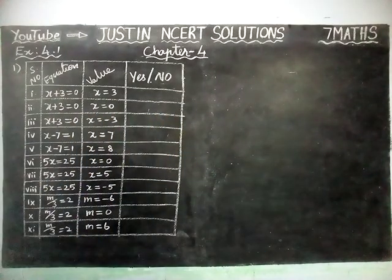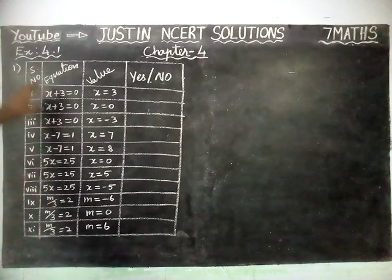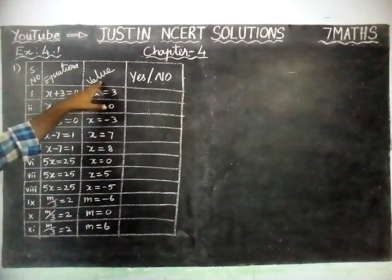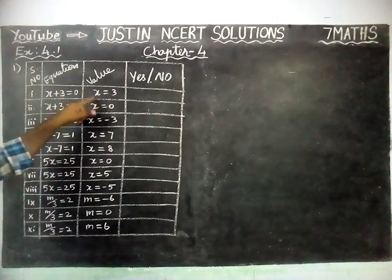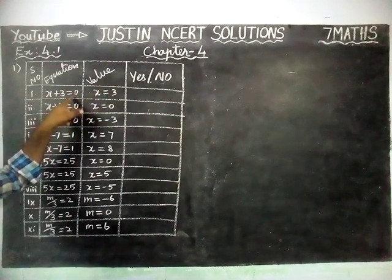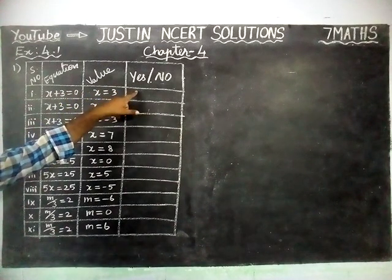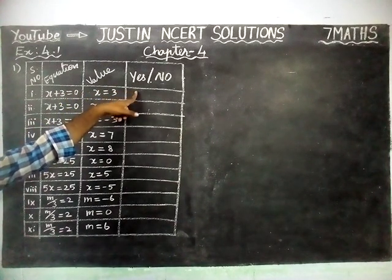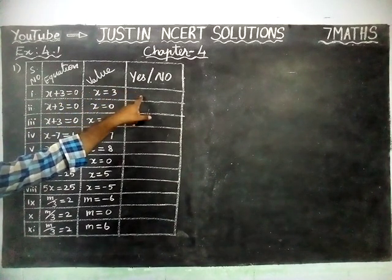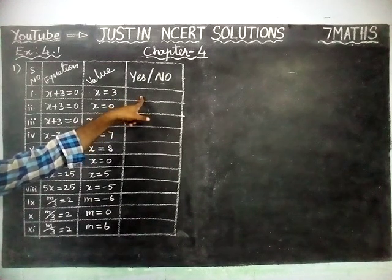They have given a tabular column. We have to find the equation — they have given the value of X, and then we have to find whether this equation is satisfied or not. If it is satisfied, we have to write yes; if it is not satisfied, we have to write no.